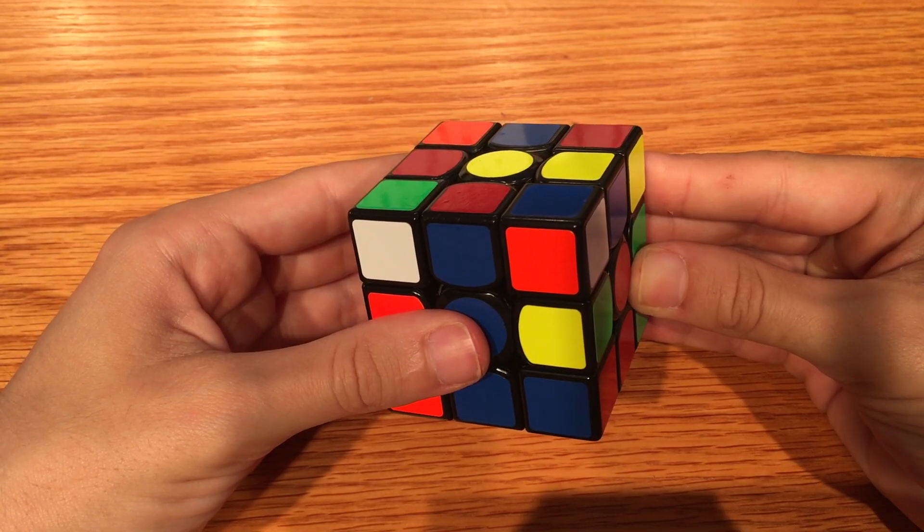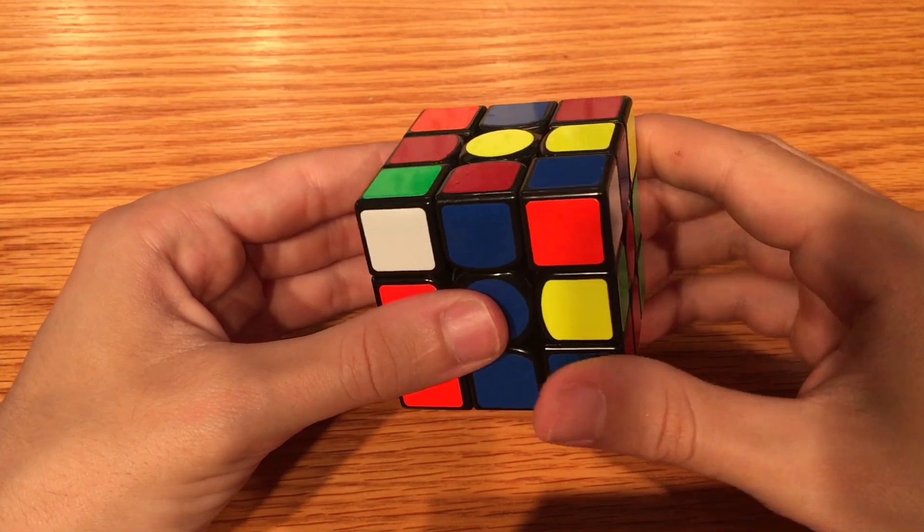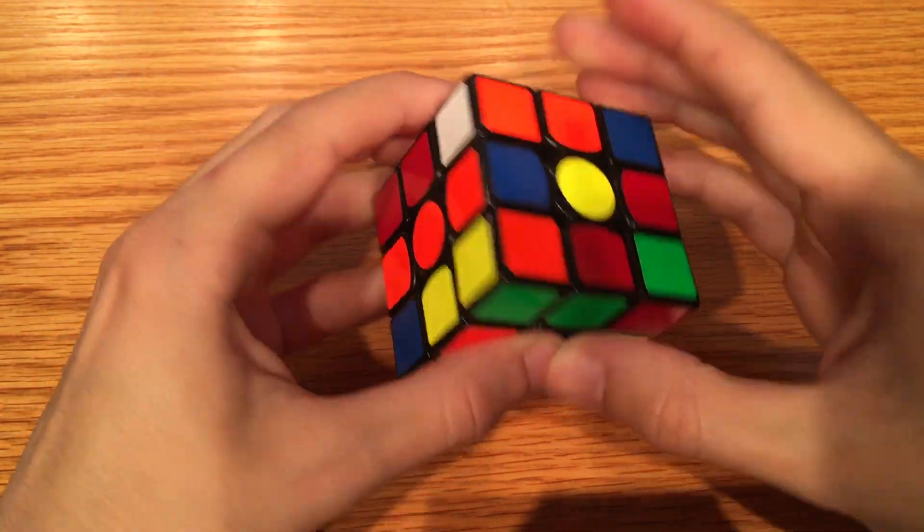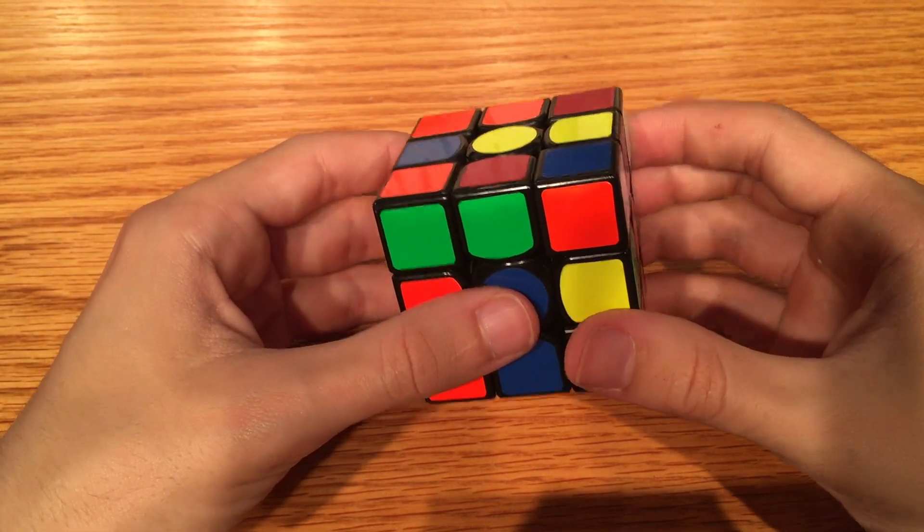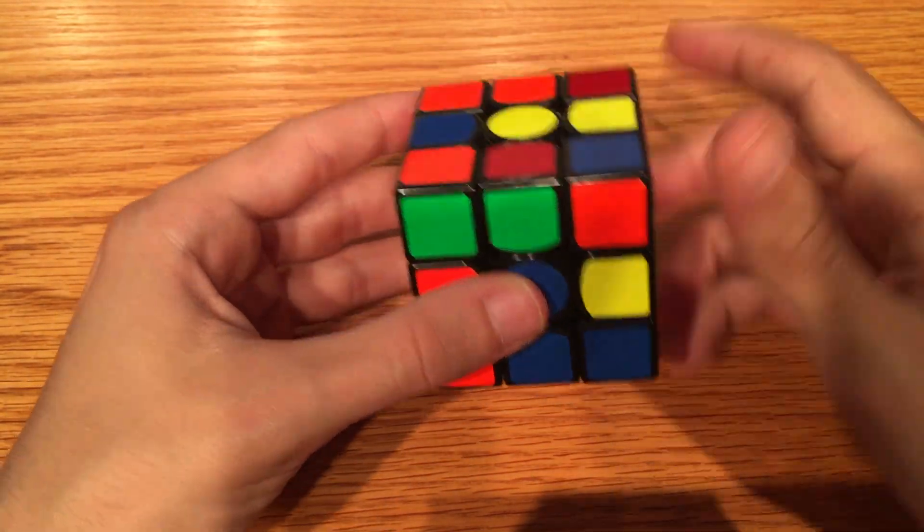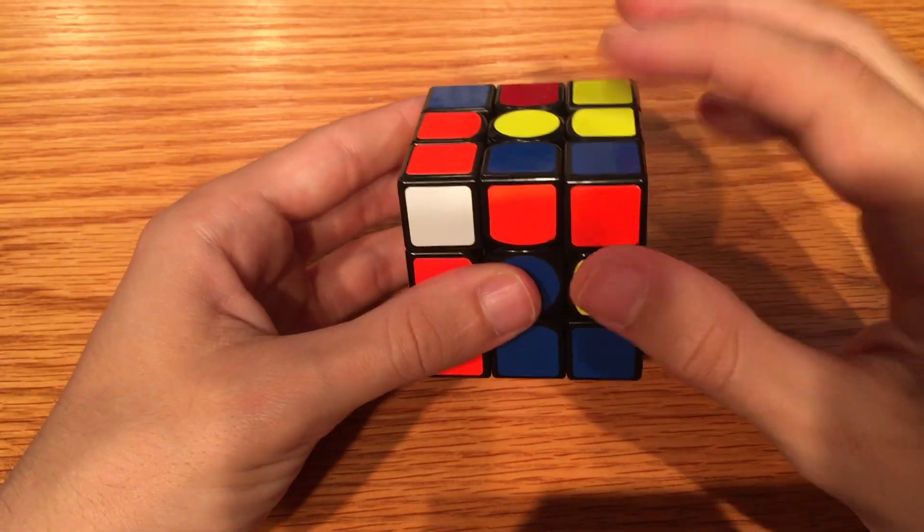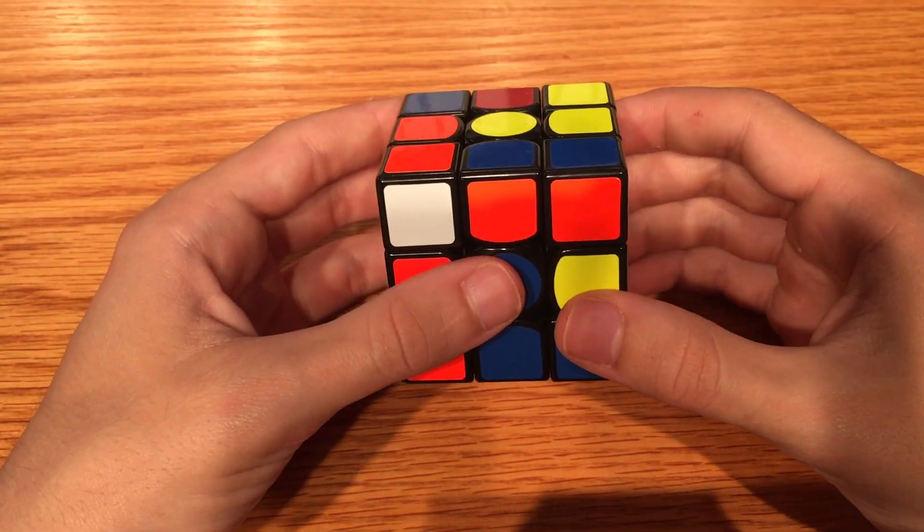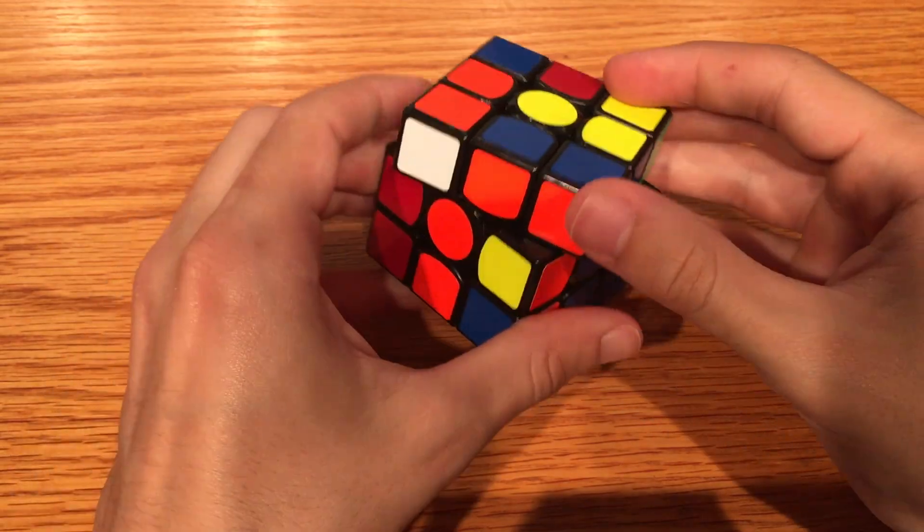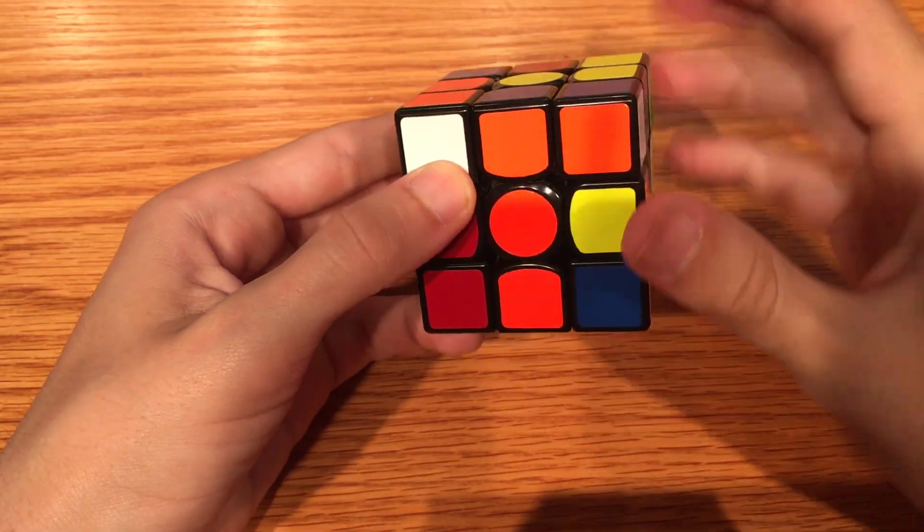There is only one step to pairing. Hide the corner, twist the edge around the top, and show the corner. Repeat this until the corner and edge are paired. Hide the corner, twist the edge around the top, show the corner. There we go. It's that simple.